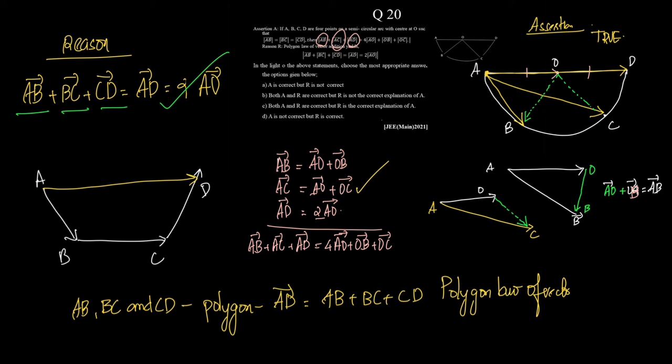And therefore, reason is also true. But there is no link between assertion and reason. So both of them are true, but it's not the correct explanation. So option B is the correct option.